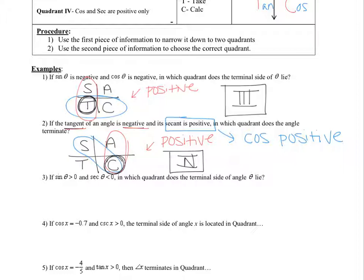Just to be clear: S in ASTC is for sine, not secant. So that does not mean secant is positive in quadrant two. This chart is for the original trig functions — sine, tangent, and cosine — where each letter indicates which primary function is positive in that quadrant.